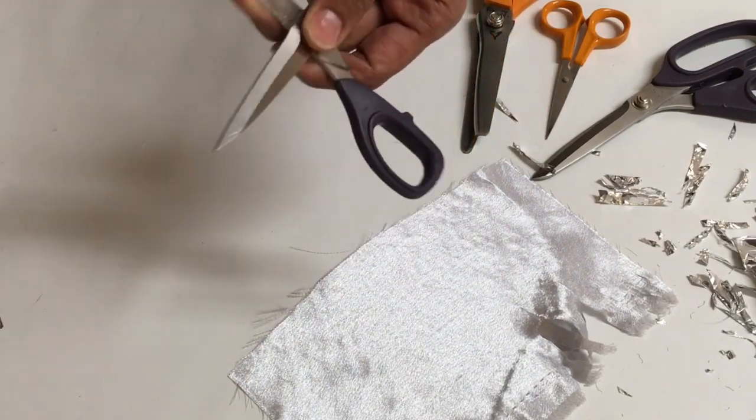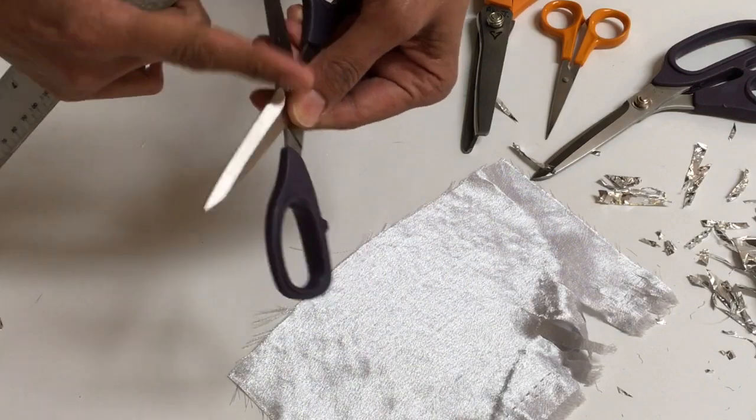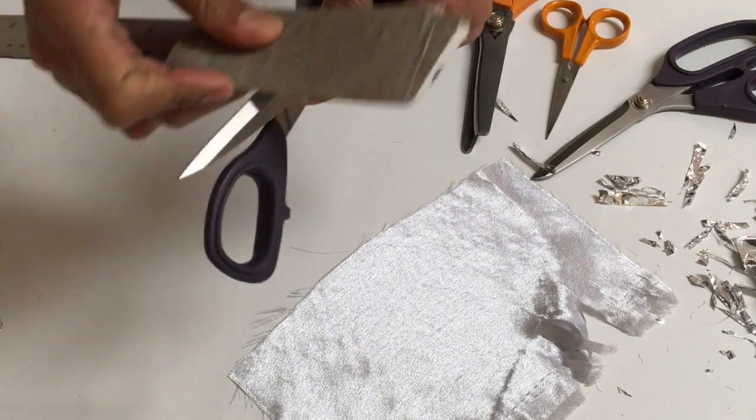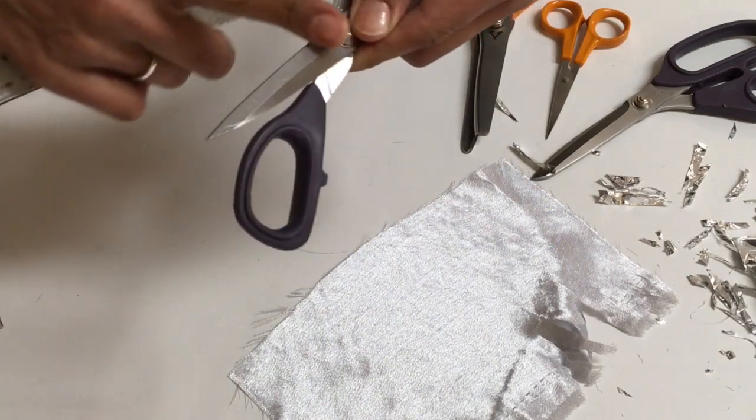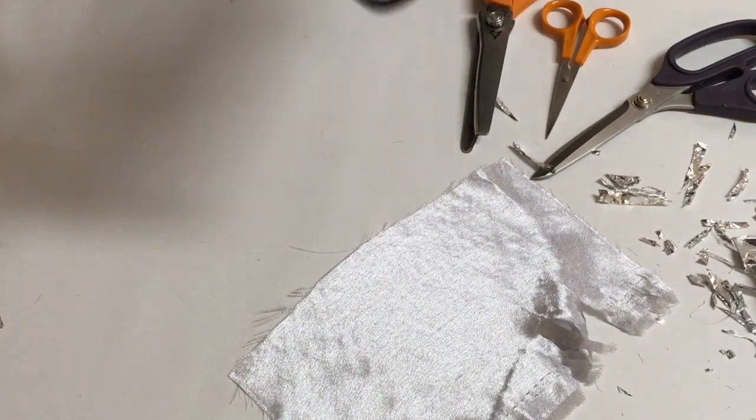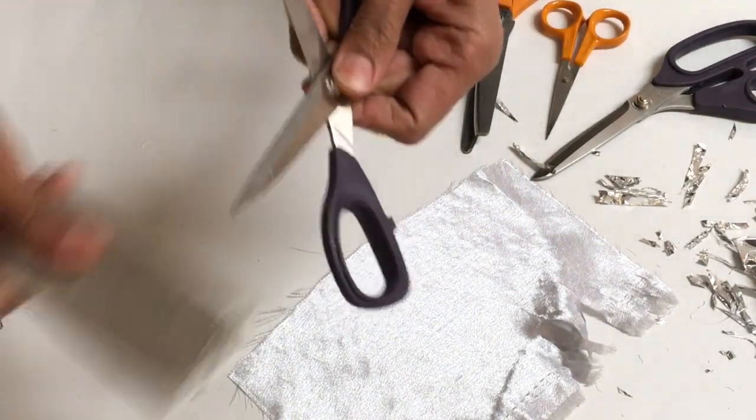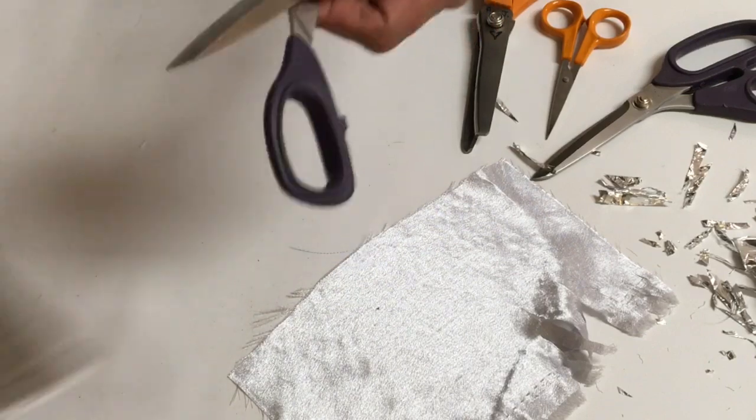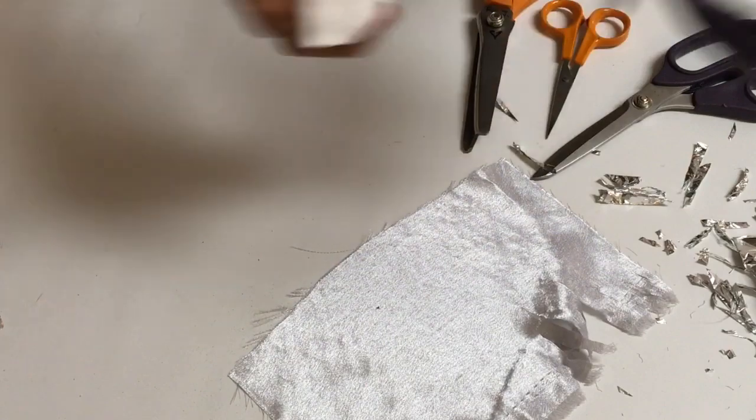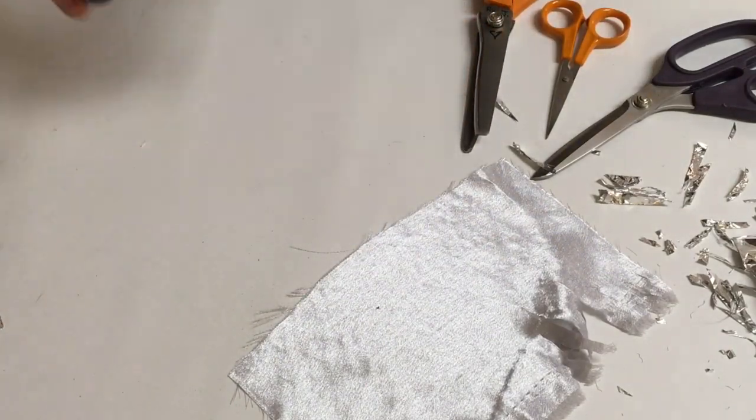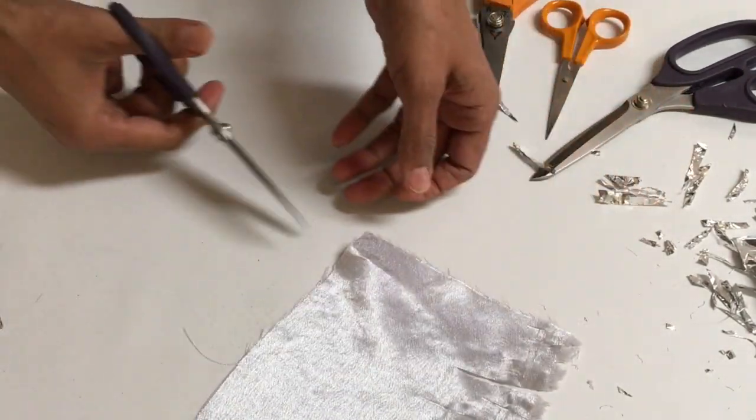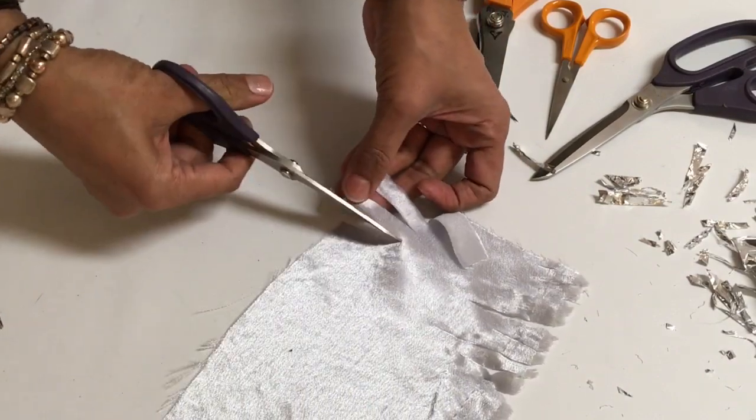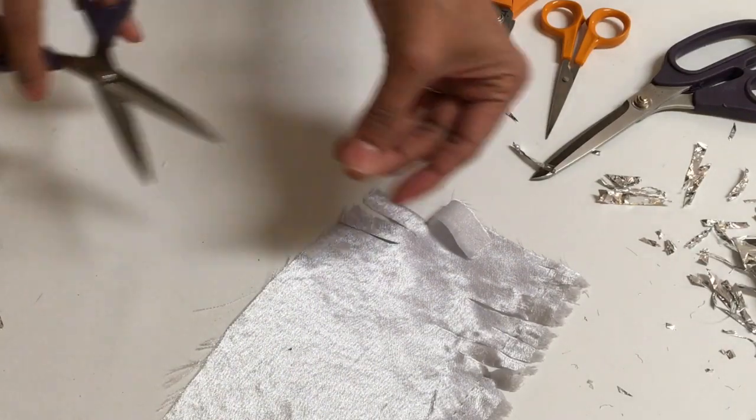Because what you want to do is sand at an angle to the blade. What you're doing is getting rid of any spurs. You're honing your blade back to shape. Give that a wipe. There we go, perfect. So we've managed to get rid of that burr and we've got a lovely cut.